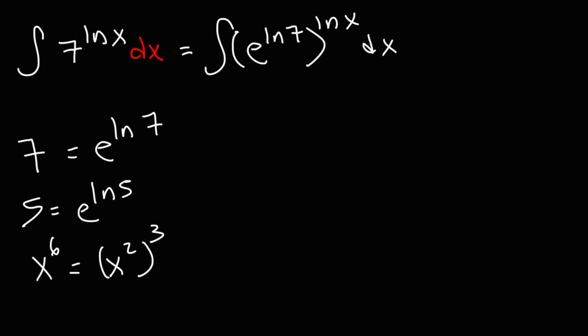When you raise one exponent to another exponent, you can multiply the two exponents. So x to the 6th is also x cubed raised to the 2nd power. They're going to equal the same thing. So we could switch the 2 and the 3. So we can rewrite our expression as the integral of e raised to the natural log of x raised to the natural log of 7 dx.